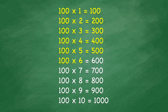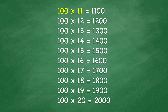100 times 5 equals 500. 100 times 6 equals 600. 100 times 7 equals 700. 100 times 8 equals 800. 100 times 9 equals 900. 100 times 10 equals 1,000. 100 times 11 equals 1,100. 100 times 12 equals 1,200.